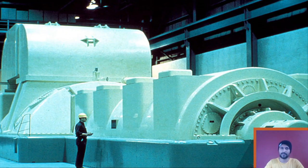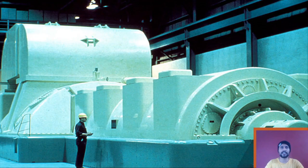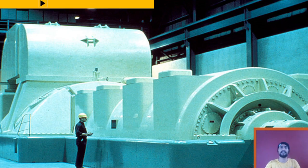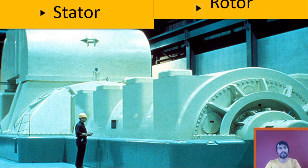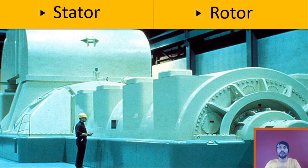So now let's begin with the construction of synchronous generator. A synchronous generator is basically constructed of two parts: the first is the stator part, which is stationary in nature, and the other is the rotor part, which is rotating in nature.